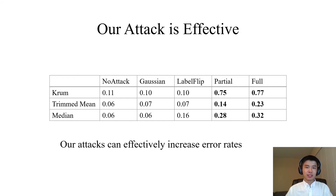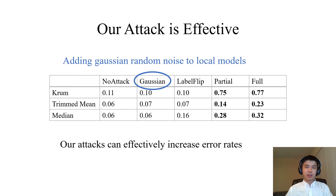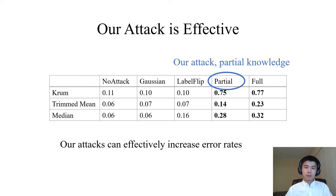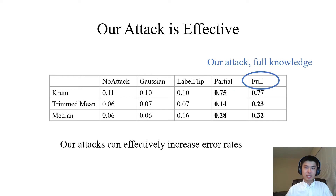Here is a table showing the effectiveness of our attacks. Each row represents a Byzantine robust aggregation rule and each column represents an attack. The numbers are the corresponding classification error rates of the learned global model. No attack means there is no attack. Gaussian and label flip are two baseline attacks: Gaussian adds Gaussian random noise to local models, and label flip flips the labels of local training data. Partial is our attack in the partial knowledge setting, and full indicates our attack in the full knowledge setting.